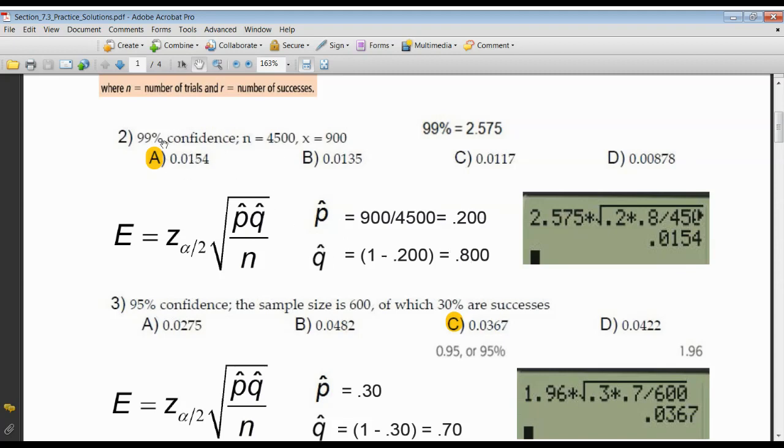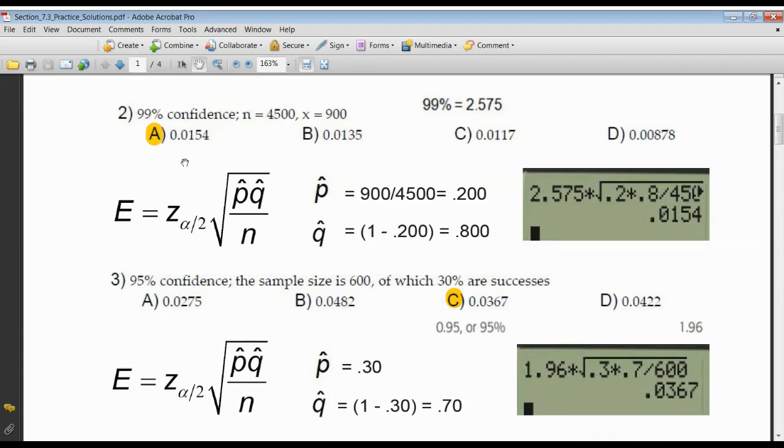The Z score associated with a 99% confidence level is 2.575. In place of Z, you're putting in 2.575 times the square root of P hat times Q hat divided by N. Since P hat was 0.200, I can get away with just using 0.2 times Q, 0.8 divided by N, which was 4,500. Hit enter, and you can see the answer is exactly correct here, 0.0154.